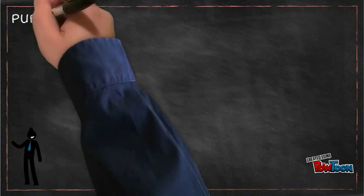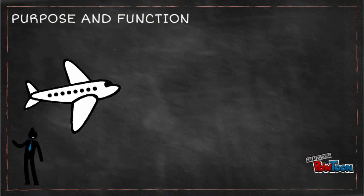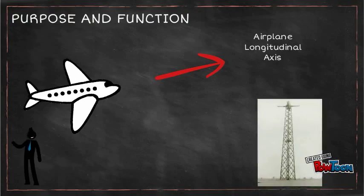The first point is about purpose and function of NDB. NDB provides aid for aircraft navigation by providing bearing information. The NDB station transmits a signal and the aircraft receives it.